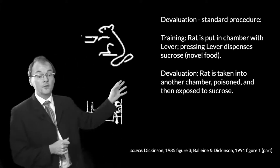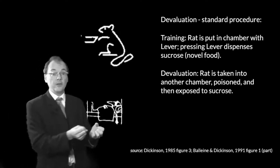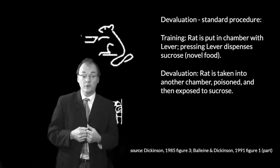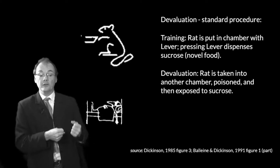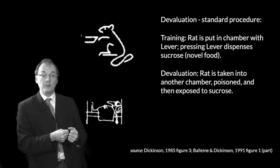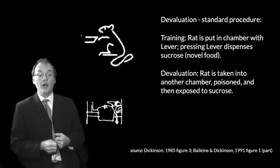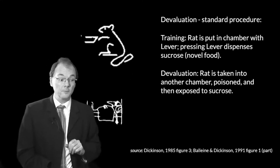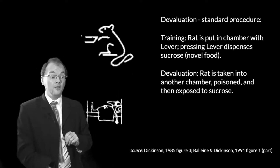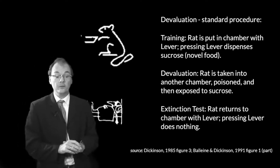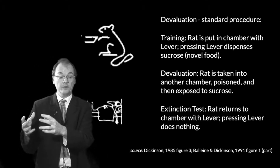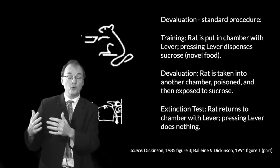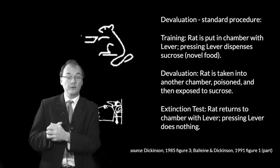And then comes the devaluation phase. The rat's taken down to a different chamber and given a mild poison, so it suffers toxicosis, and then it's exposed to that papaya — the sucrose solution — while it's ill. That's the devaluation phase. Then in the extinction test, the rat goes back to the chamber where the lever is, where pressing the lever actually does nothing — there's no reward. And we just see how much the rat presses the lever.